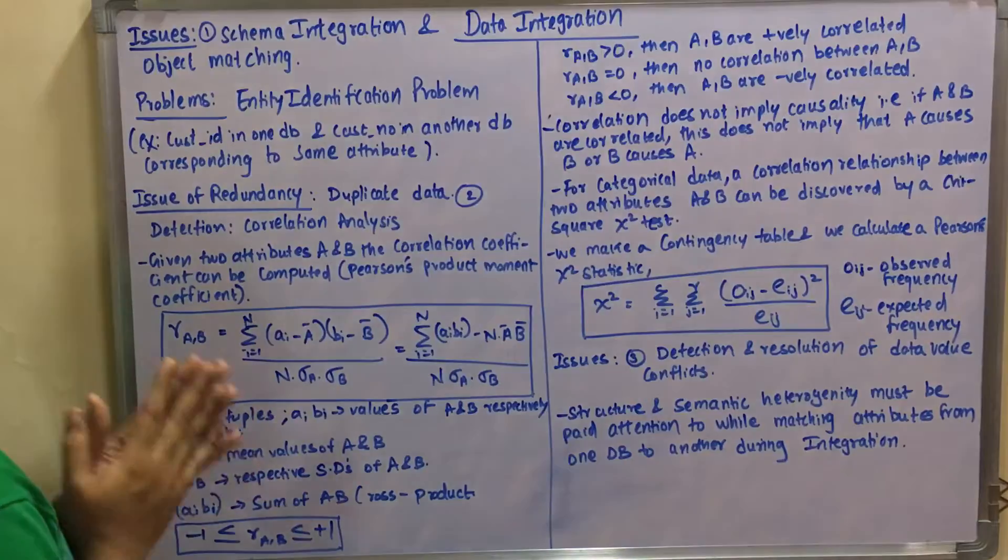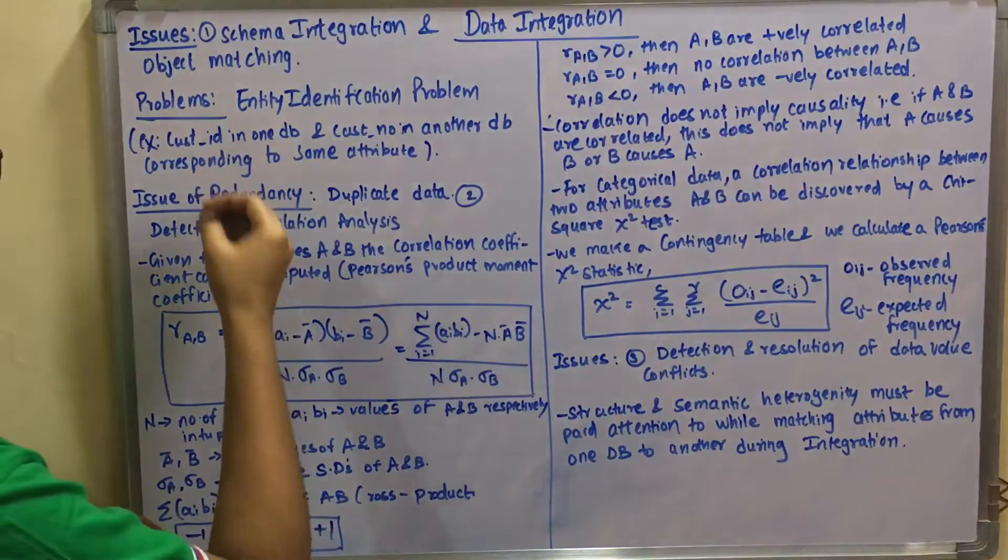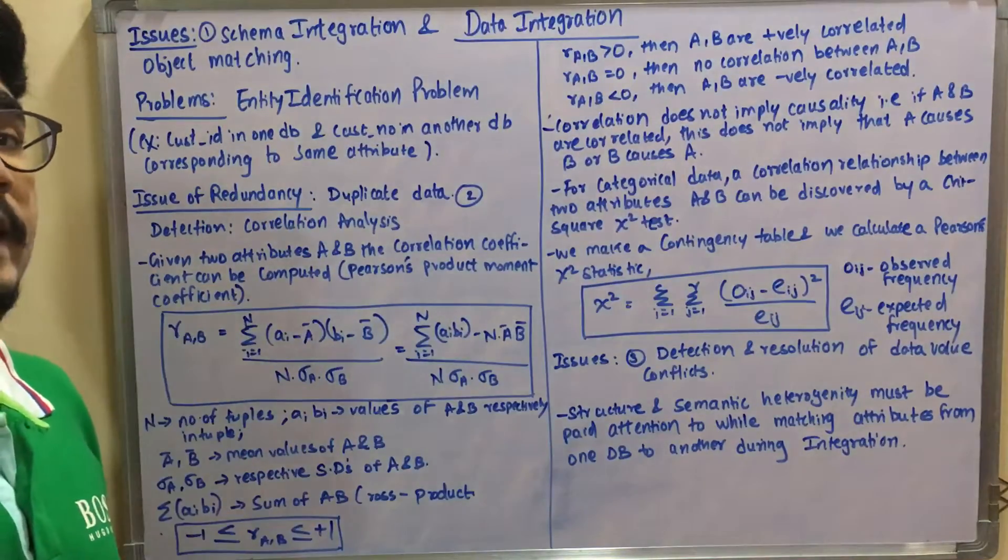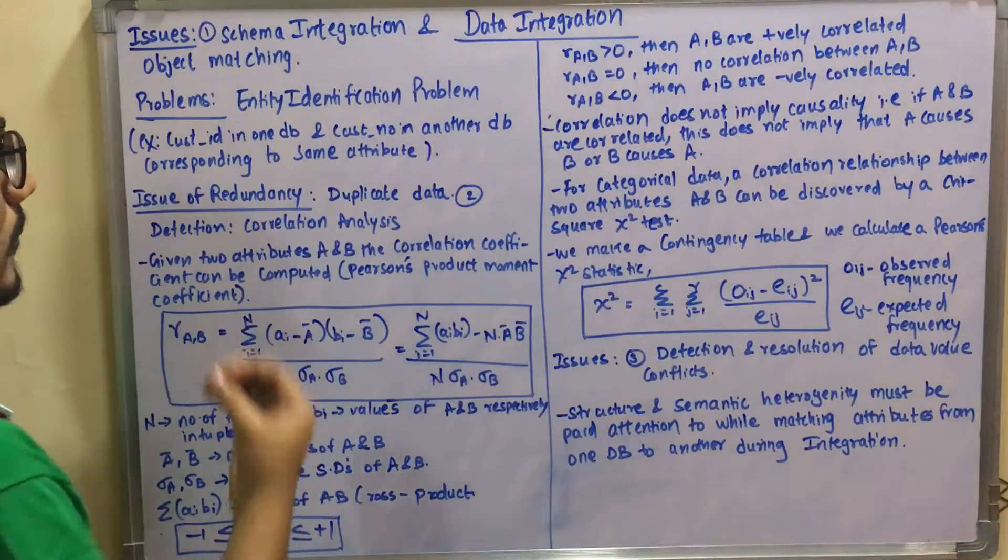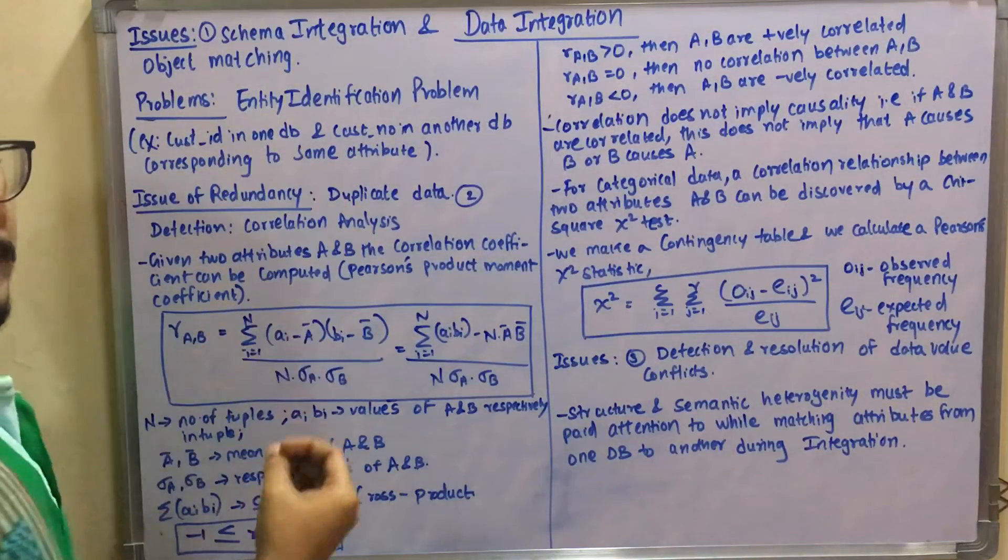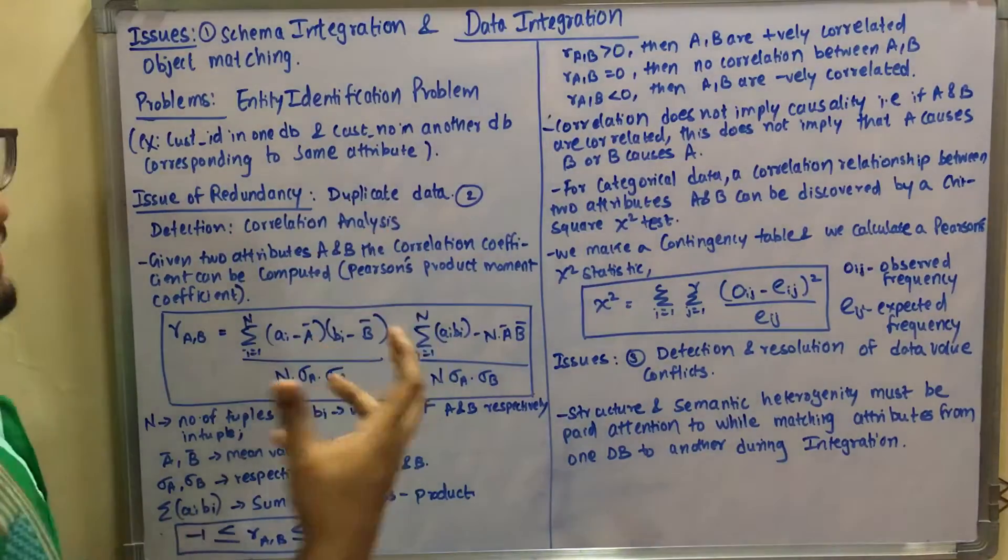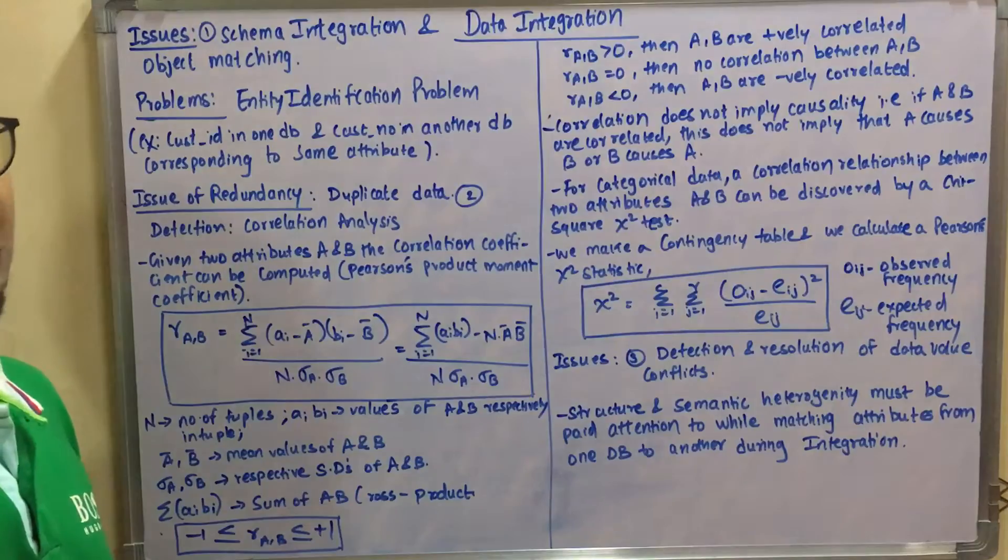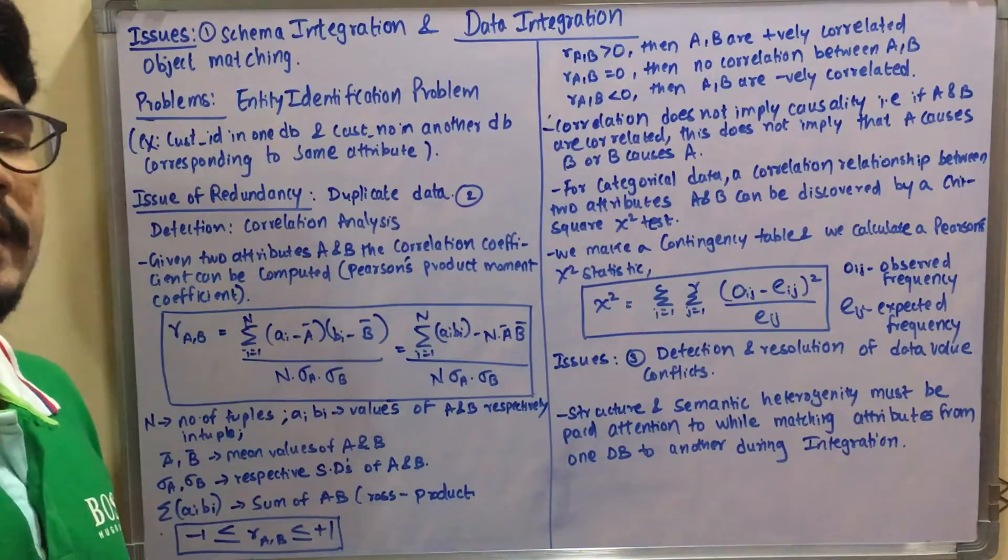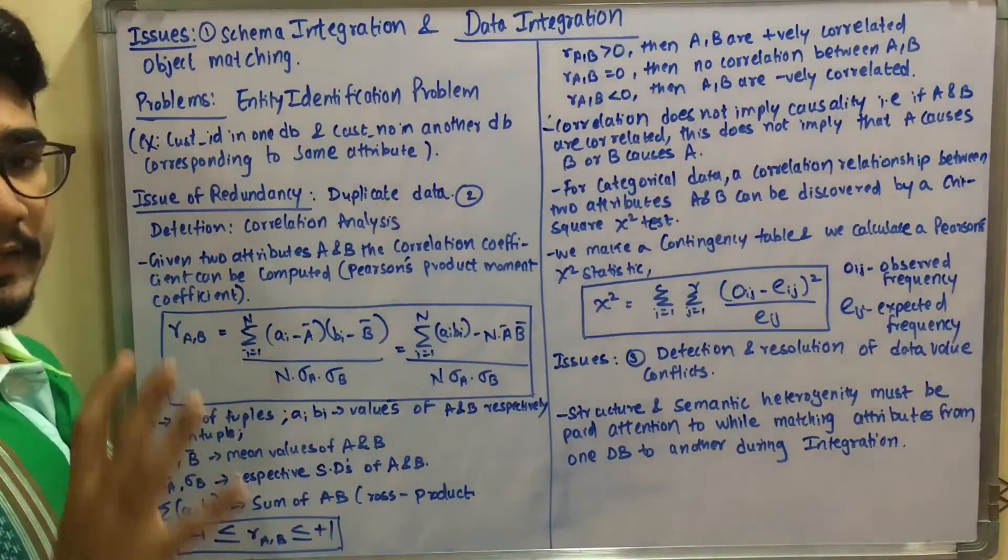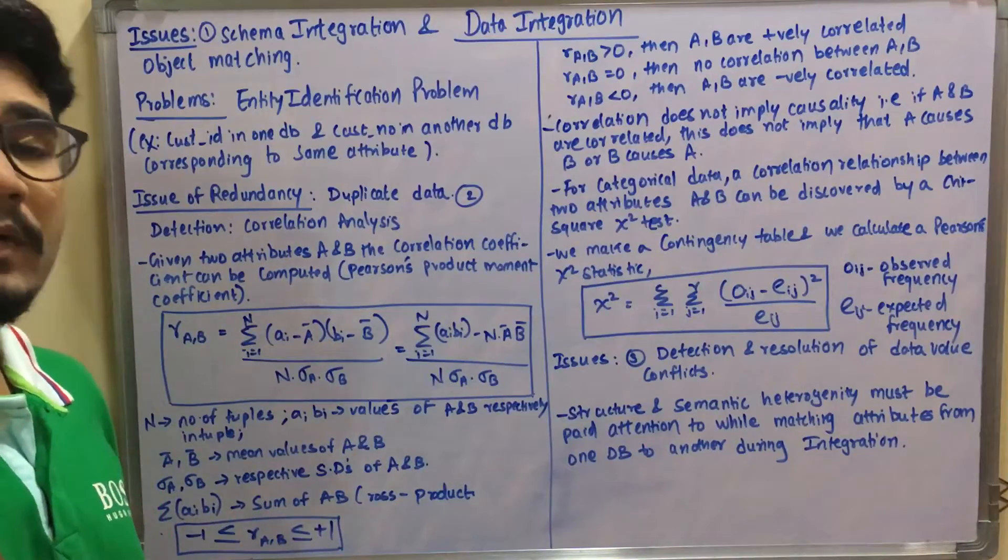You have the issue of data redundancy while you integrate from different sources. Data redundancy addresses duplicate data or data which has no particular value, especially null values. To detect redundancy you have correlation analysis, which we studied in previous videos.